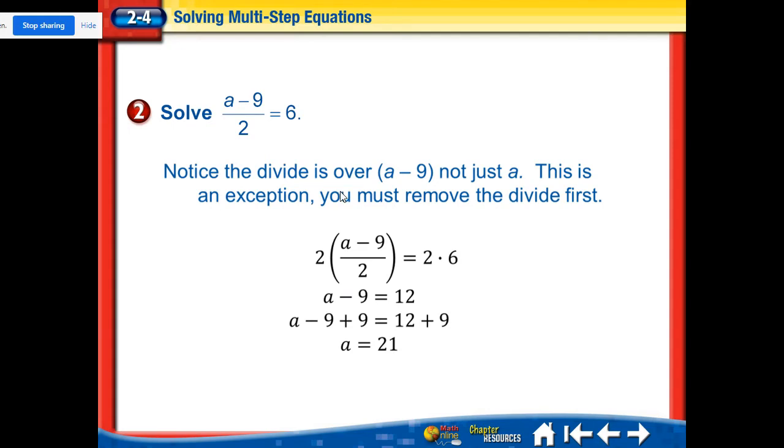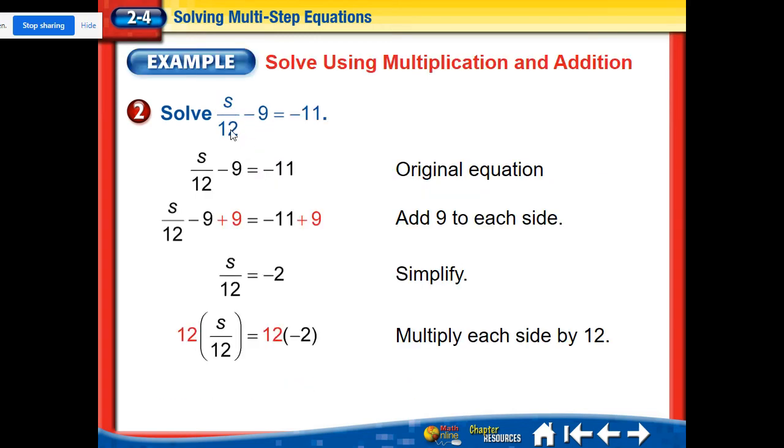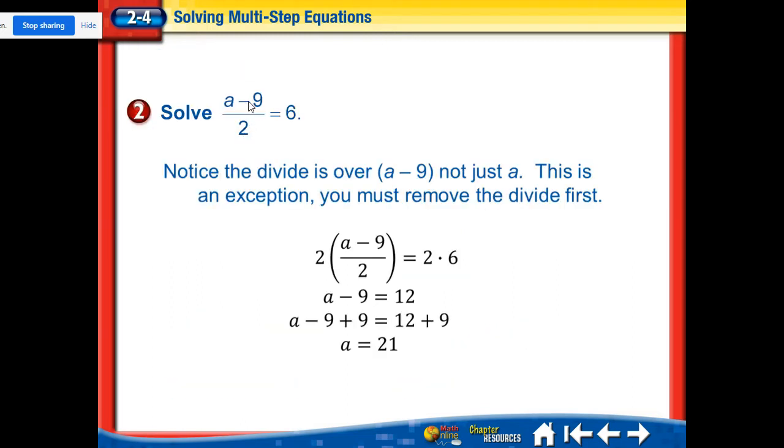All right. Here's the one that is the exception. Notice the difference between this problem and the one we just got done doing. a minus 9 divided by 2. The whole a minus 9 is underneath. Notice that the divide is over a minus 9, not just a. So this a minus 9 and then the whole thing is divided by 2. This last one, just the s was divided by 12. So here, because it's all divided by 2, you must remove the divide first. So how do we get rid of the divide? We multiply. And then those two things will cancel out. So I multiply this side by 2 and this side by 2. Those two cancel out and I have a minus 9 and this equals 12. So now I got to get rid of the minus 9. So I plus 9 to both sides and a equals 21.